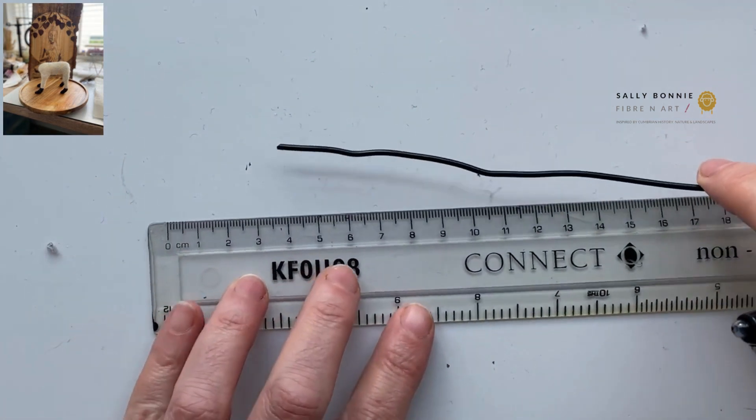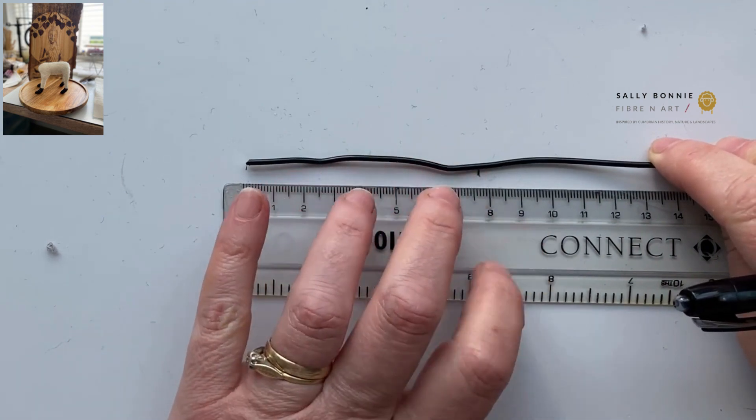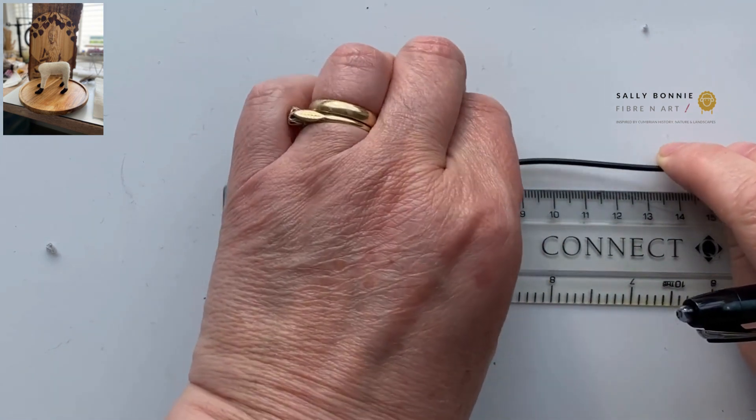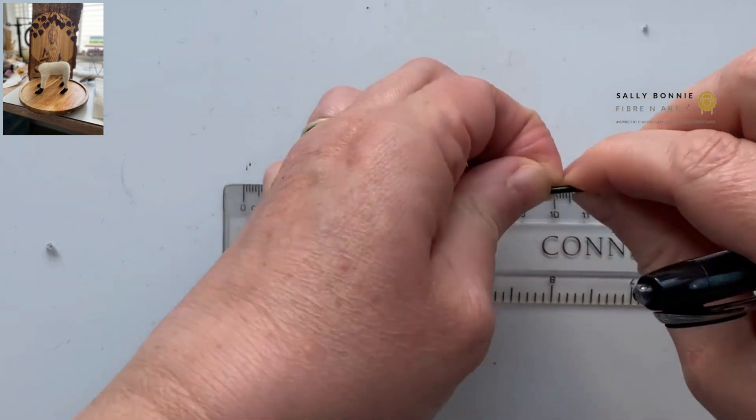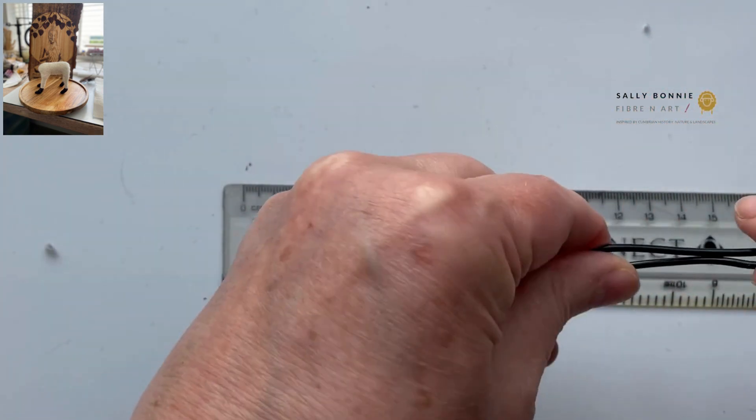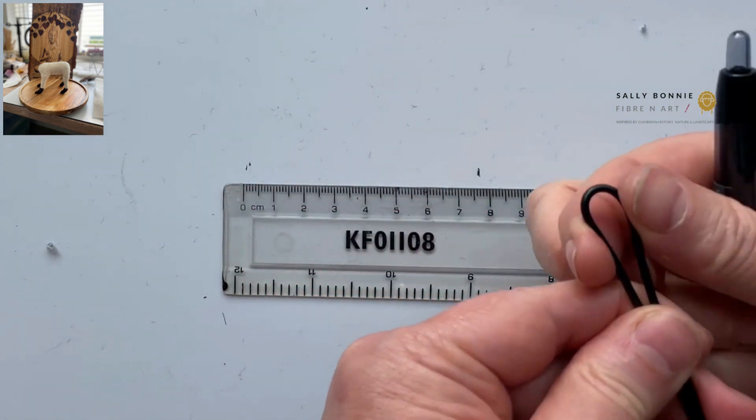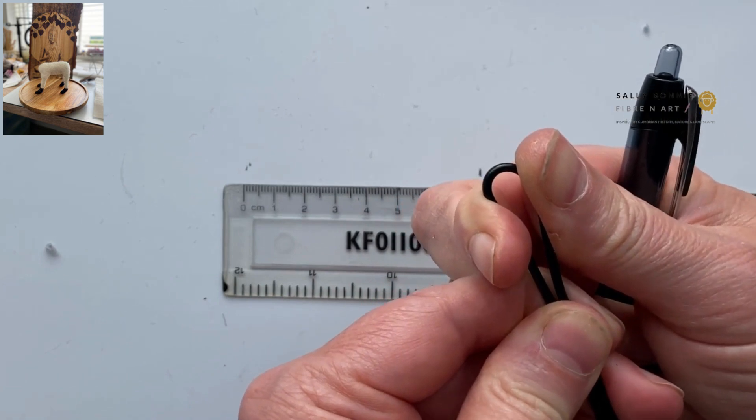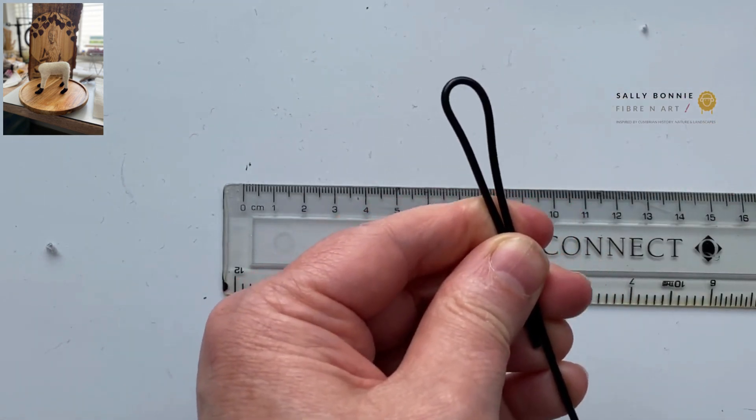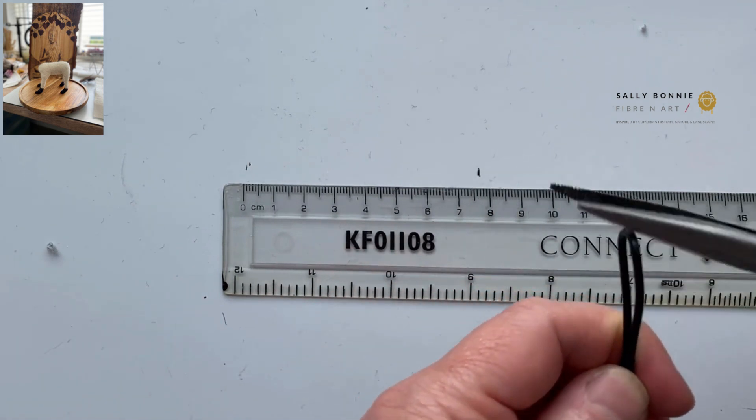Put that to one side. So you've got a very long piece of wire now. So I have my ruler now, ladies, and what we're going to look at is about eight centimeters. So we find eight centimeters and then we just fold the wire over. You've got two pieces then.